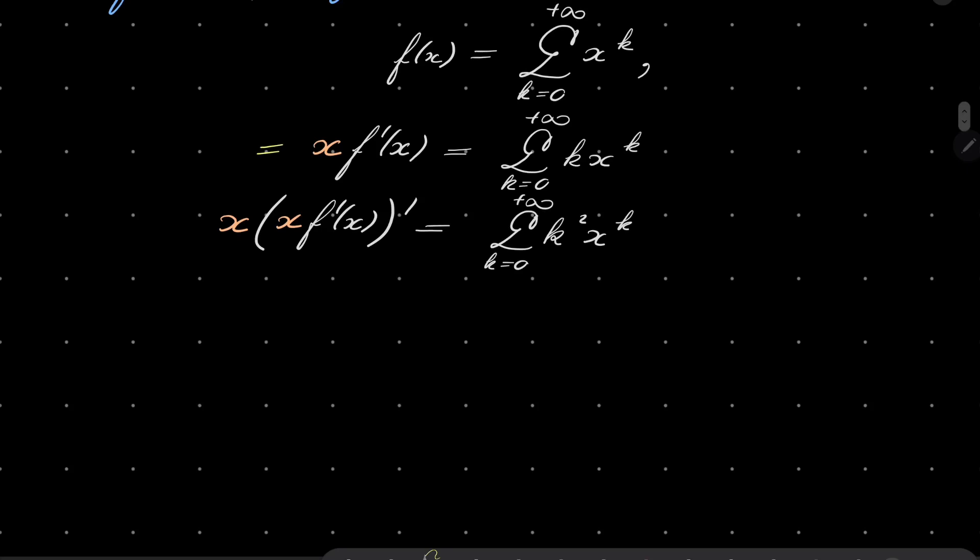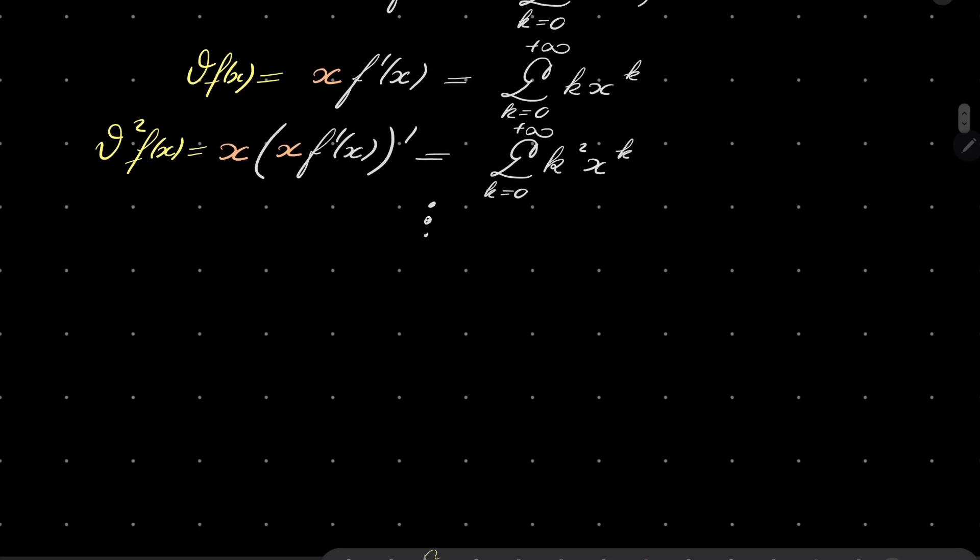So this can be written as theta f of x. This is second application of our theta operator and so on and so on. In the end, after six applications, sixth application of theta operator will give us series from 0 to infinity k to the power of 6 x to the power of k.